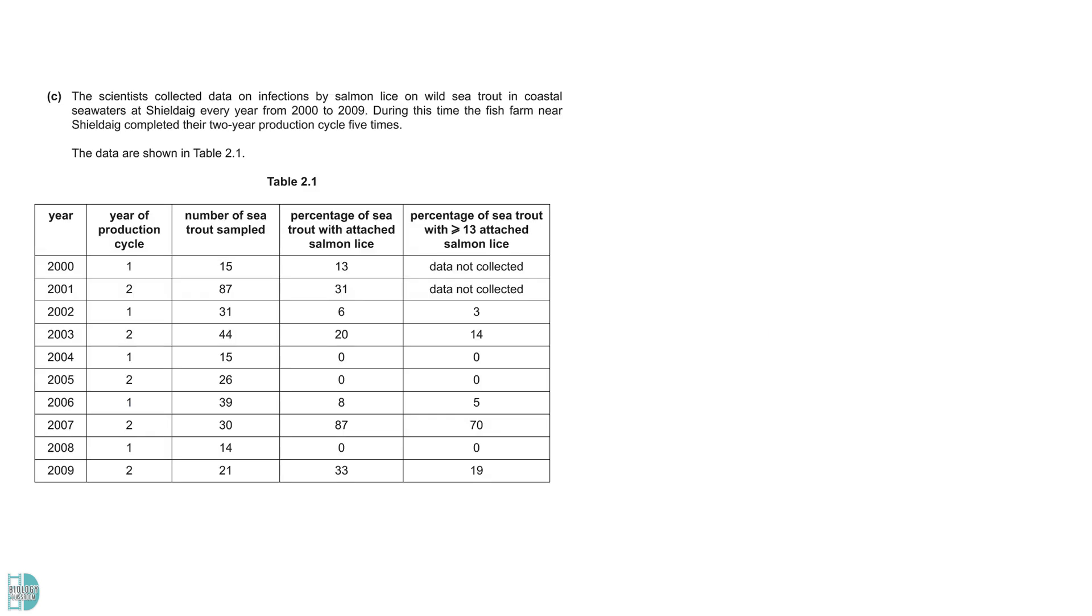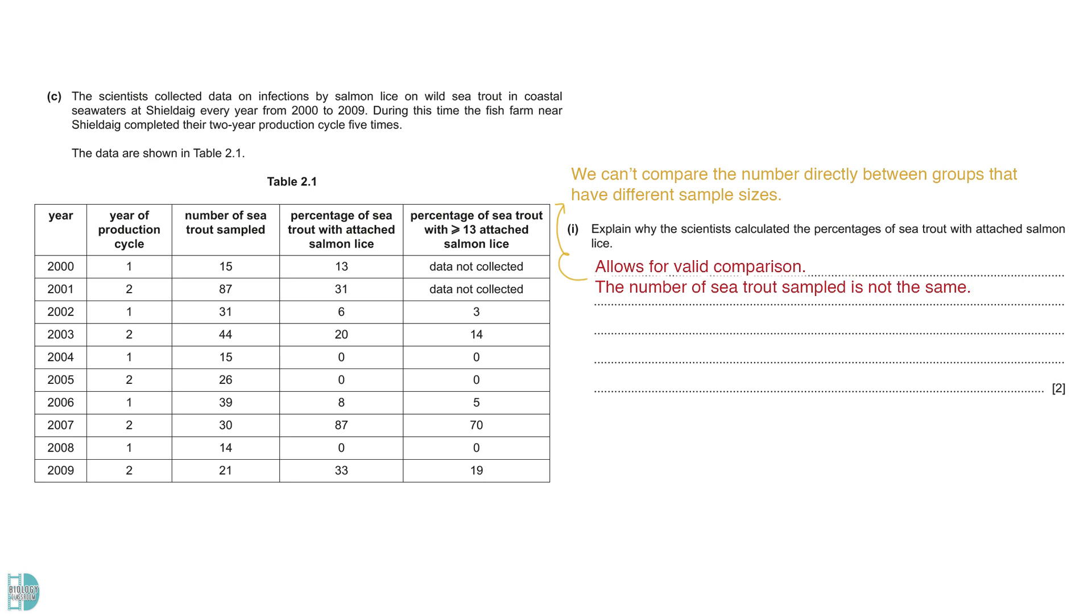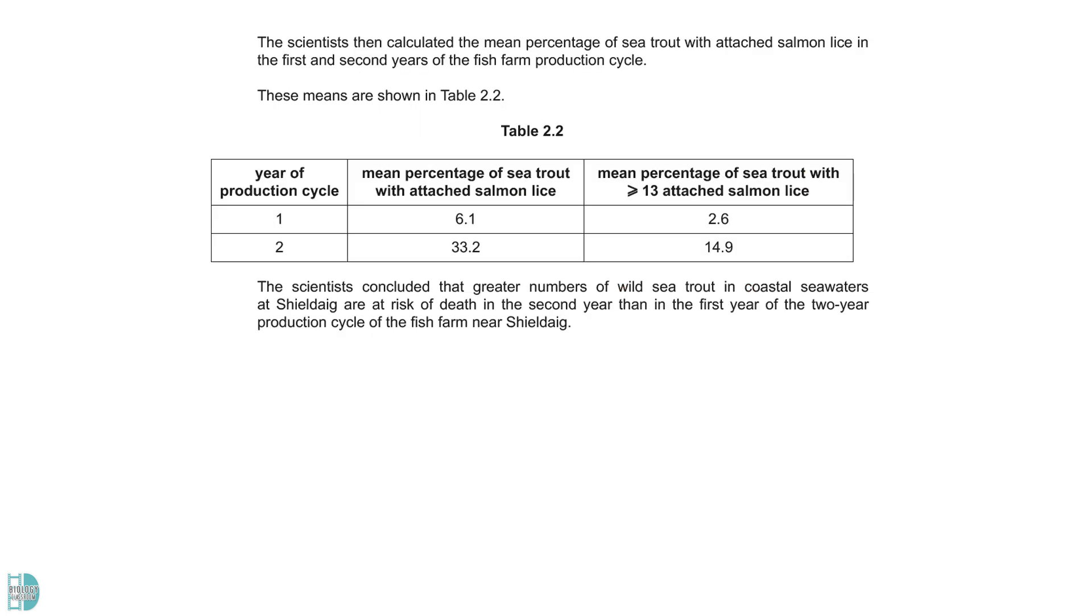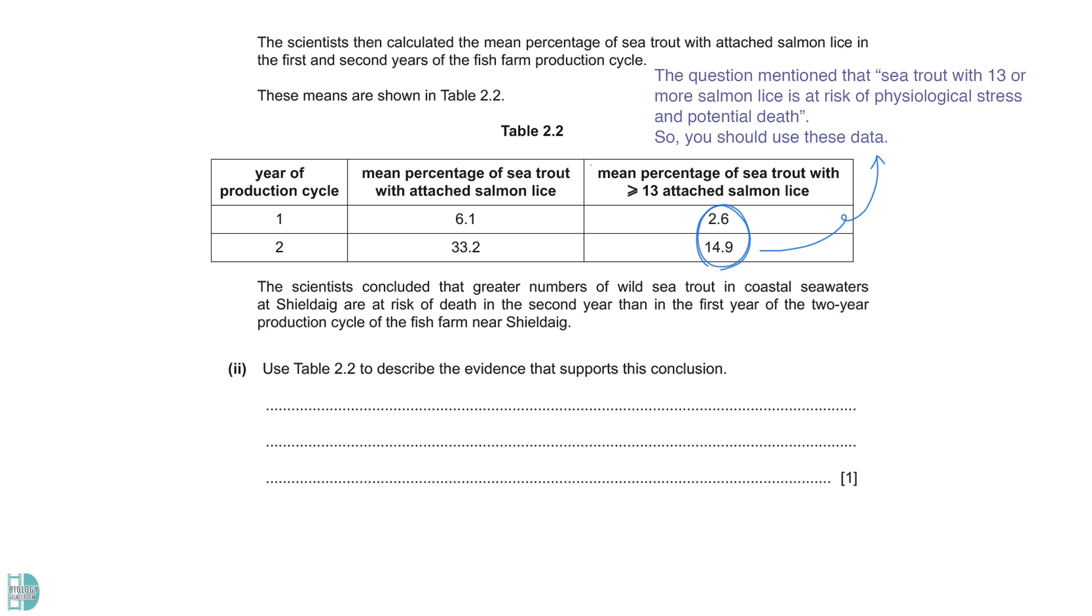Part C shows us the data of the research. Question 1: Explain why the scientists calculated the percentages of sea trout with attached salmon lice. Comparing the numbers directly is not a valid comparison as the number of sea trout sampled is not the same. When the sample size is larger, there will be more trout with lice. It does not show the effect of the year of the production cycle. Table 2.2 shows the mean values for year 1 and 2 in the cycle. Question 2 wants you to describe the evidence that supports the conclusion that a greater number of wild sea trout are at risk of death in the second year. The earlier part of this question mentioned that sea trout with 13 or more salmon lice is at risk of physiological stress and potential death. So, you should compare the number of trout with 13 or more lice in year 1 and 2. You can either quote both figures or manipulate them by calculating the difference.